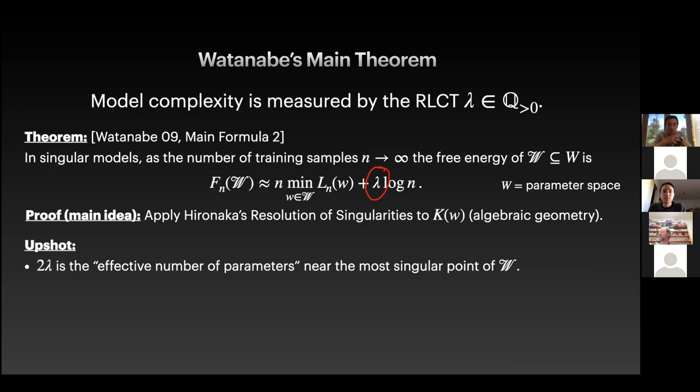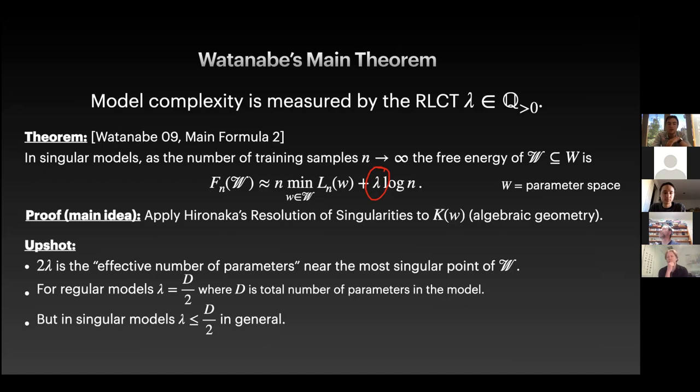The main theorem is this. In singular models, as the number of training samples approaches infinity, the free energy of any given subset W asymptotically satisfies this relation here. And so, we see that the RLCT plays a key role in this asymptotic relation. And the proof of this is about 300 pages in Watanabe's algebraic geometry and statistical learning book. But the key idea is that he uses Hironaka's resolution of singularities, one of the main theorems of algebraic geometry, to de-singularize the Kullback-Leibler divergence.